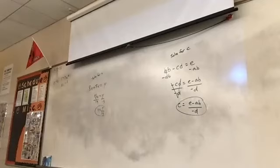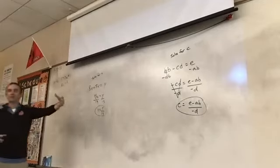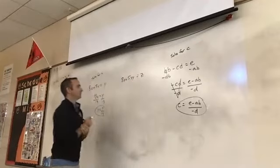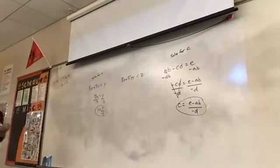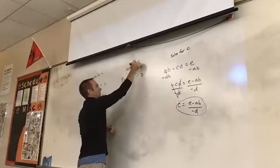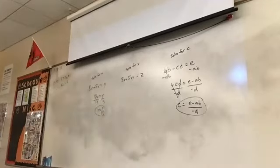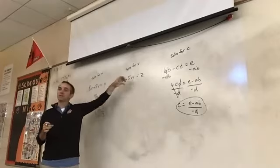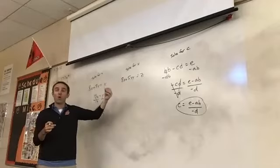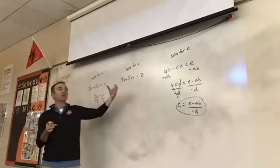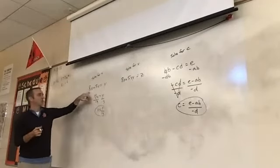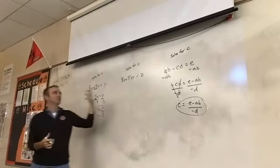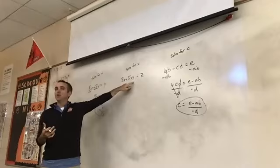Now let's take this one step further: 8x plus 5xy equals z, and we're still solving for x. This is the toughest part of today's lesson. We need to combine those two x terms into one x, but we can't just add 8 plus 5 because of that extra y. We can't combine them the same way.